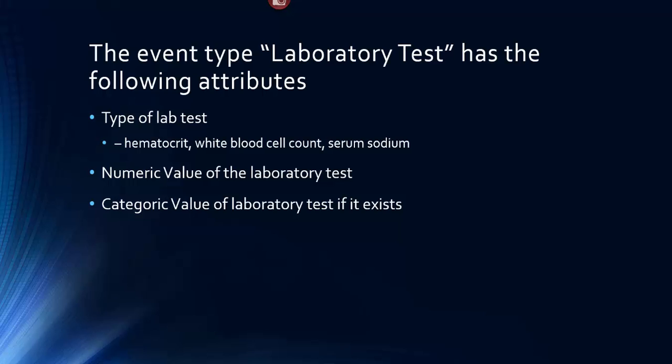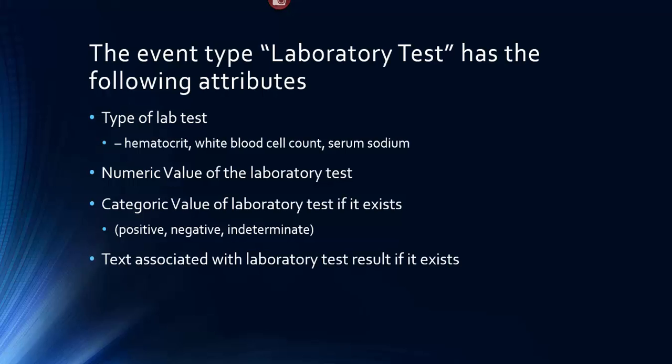Is it a hematocrit of 15? A hematocrit of 30? There is also a categoric value of the laboratory test, if it exists. Some laboratory tests are not numeric — they're categoric, so you might see positive, negative, or indeterminate as a result. There might also be a text associated with a laboratory test, such as genomics results or SPEP results.